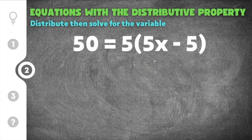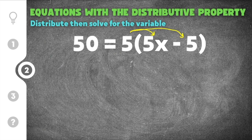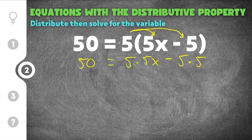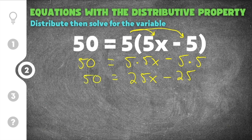Let's jump to our second practice problem: 50 equals 5 times the quantity 5x minus 5. Again, the first step is to distribute — we distribute 5 to everything inside the parentheses. We do 5 times 5x, keep the minus sign, then 5 times 5. Simplifying: 25x minus 25 equals 50.